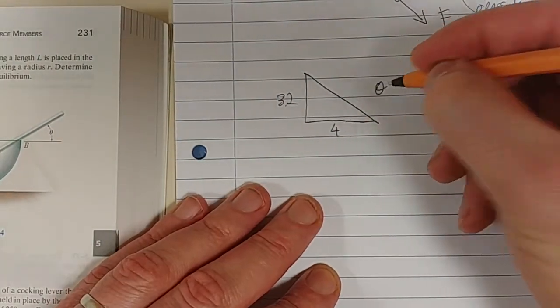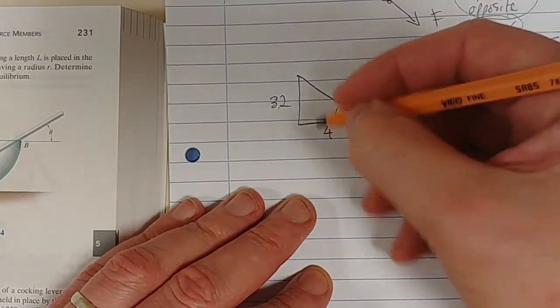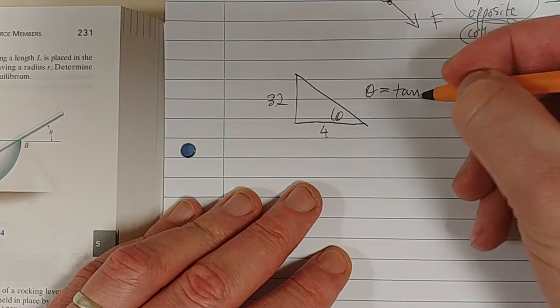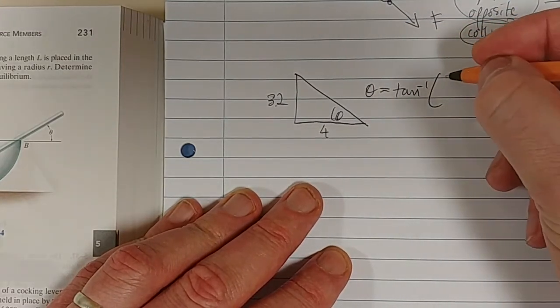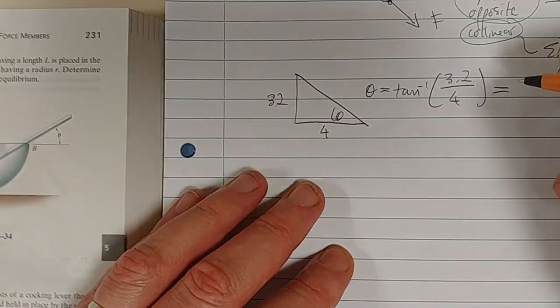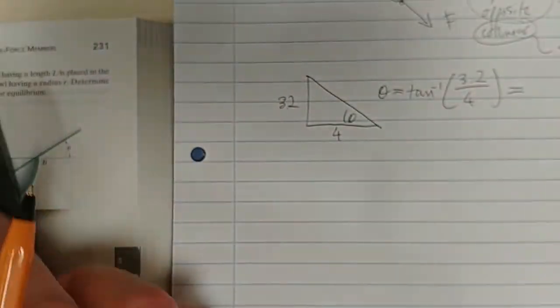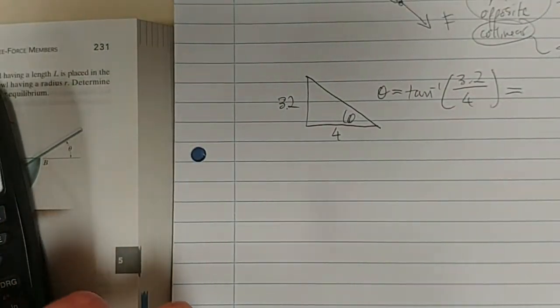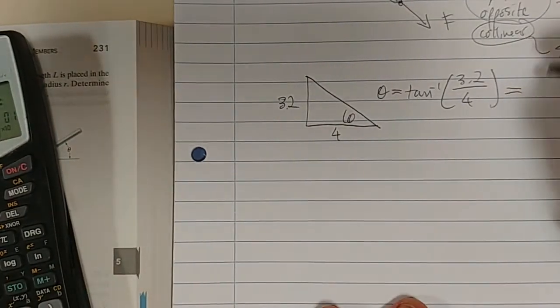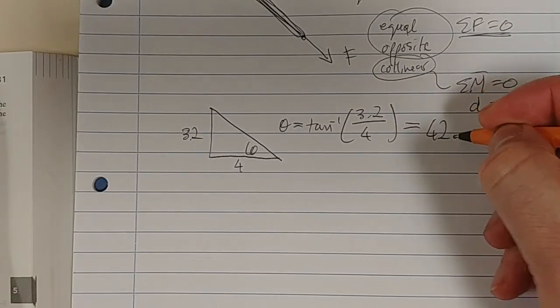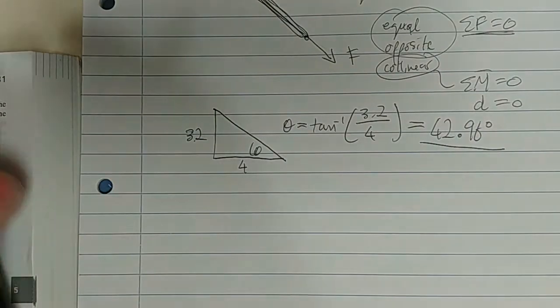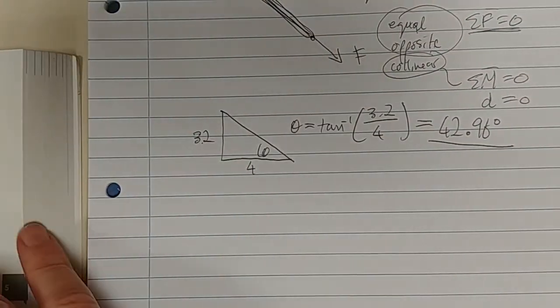So theta, I just worked it like this. You can obviously do it in another way. You're using ratios. Theta is just tan to the minus 1 of opposite over adjacent. And I got second function tan, 3.2 divided by 4. I got 42.96 degrees.